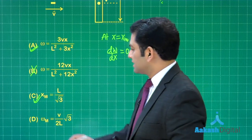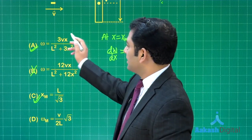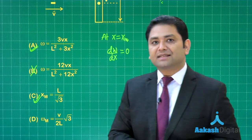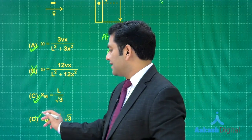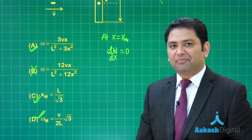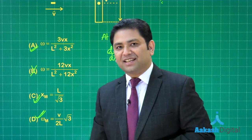Now what you need to do is put this value of x_m here. The corresponding value of angular speed would be the maximum angular speed, and that is there—you'll get option number D as the correct one. All right, now let's go to the next.